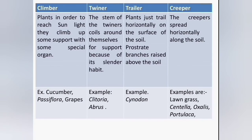Twiners are also called stem climbers. The stem of the twiner coils around a support because of its slender habit. Example: Clitoria, Abrus. Trailers are weak-stemmed plants that trail horizontally on the surface of the soil; the apical portion of the prostrate branches is raised above the soil. Example: Cynodon. Creepers are also weak-stemmed plants that spread horizontally along the soil surface. Examples include lawn grass, Centella, Oxalis and Portulaca.